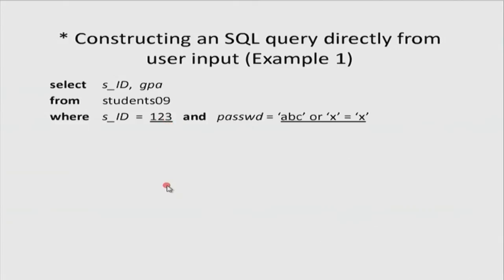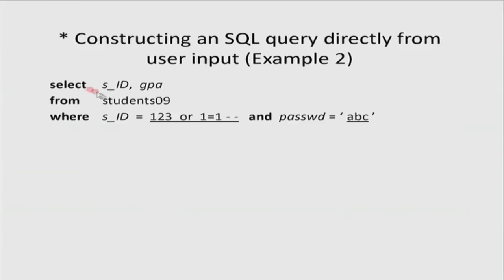This is a serious problem — it gives you information you are not supposed to see about other people. A second abuse: type for student name '123 OR 1=1--'. In some SQL dialects, '--' is a comment symbol, so everything after it is ignored. '1=1' is obviously true, so the whole condition is true and it returns those records.